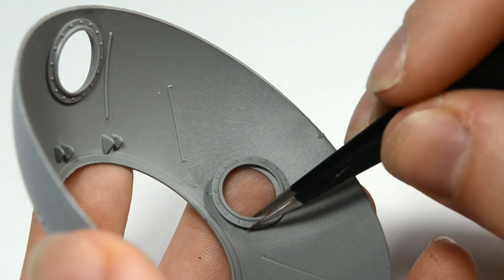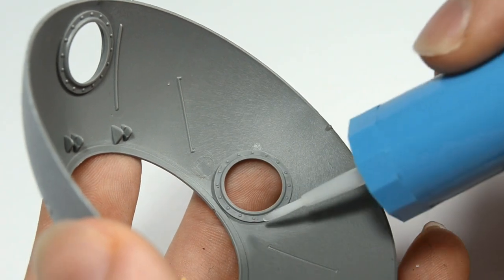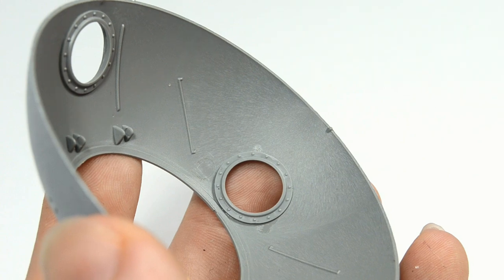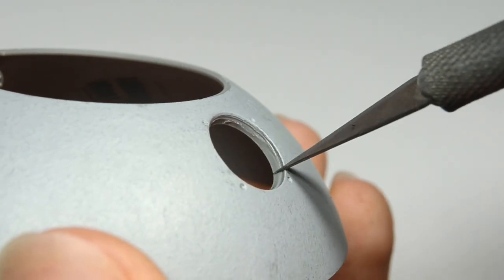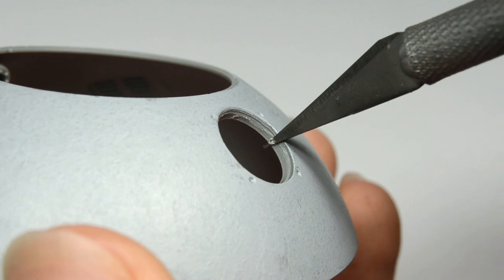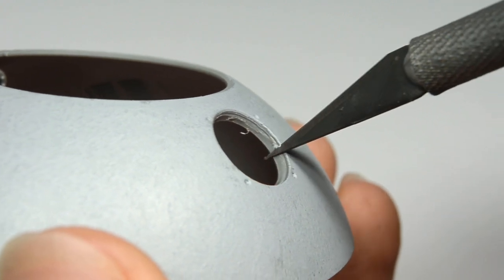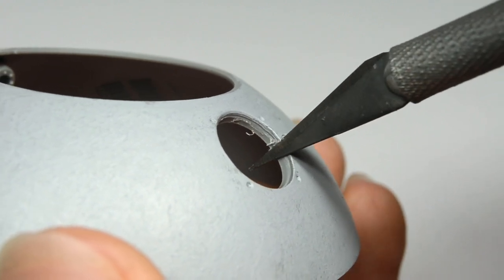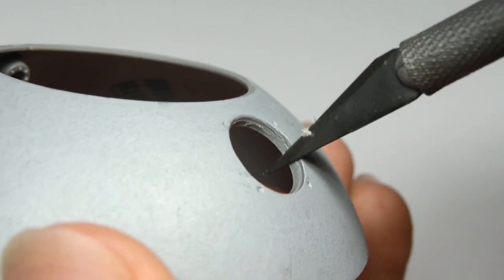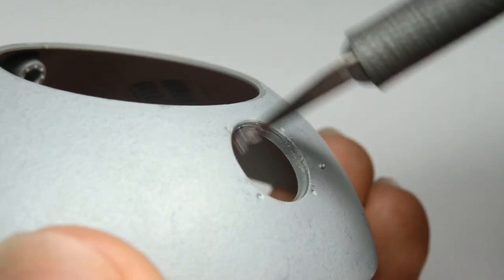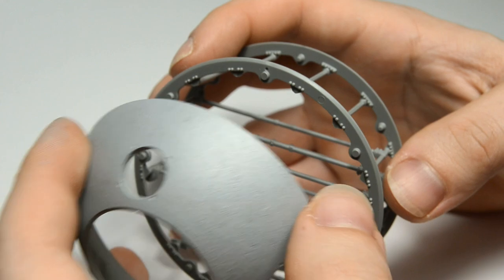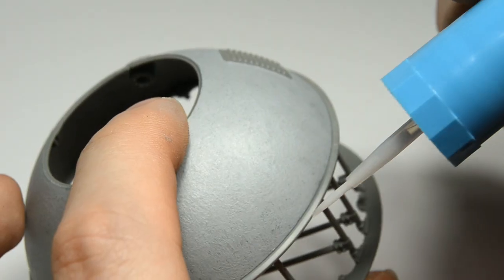Before I went any further I glued all the inner ball mount fixtures in place. The excess molten plastic had to be scraped off so the ball mounts would fit snugly. Now I could glue both halves of the hull to the mainframe.